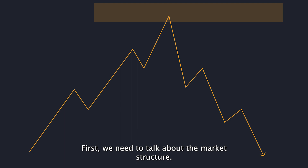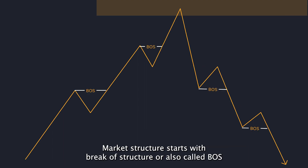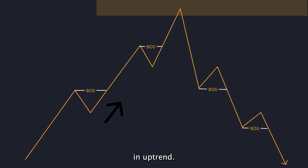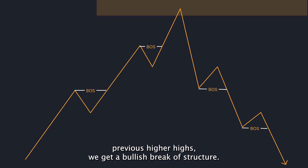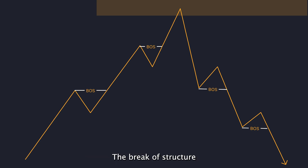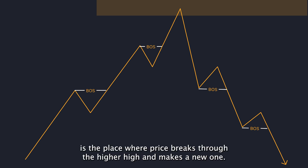First, we need to talk about market structure. Market structure starts with break of structure, or BOS, in an uptrend. When price is making higher highs and higher lows, and breaking through the previous higher high, we get a bullish break of structure. The break of structure is the place where price breaks through the higher high and makes a new one.